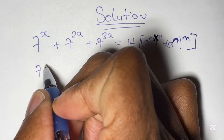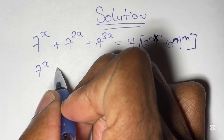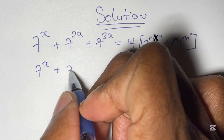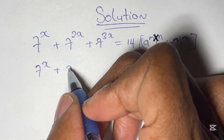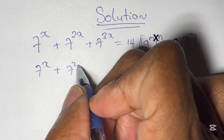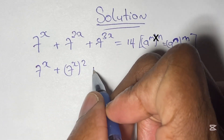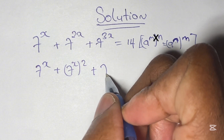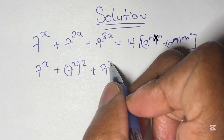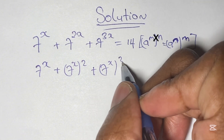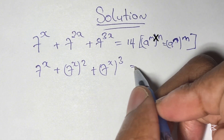So from here we say 7 to the power of x, plus 7 to the power of x in brackets powered by 2, then plus 7 to the power of x in brackets powered by 3, and that's equal to 14.